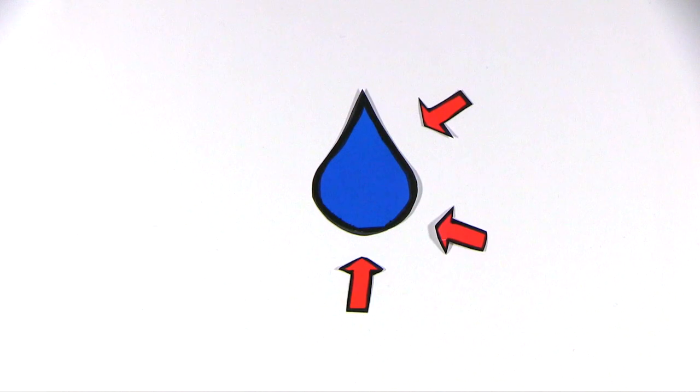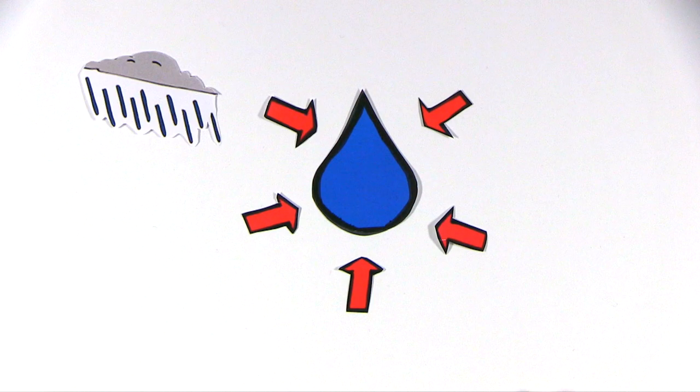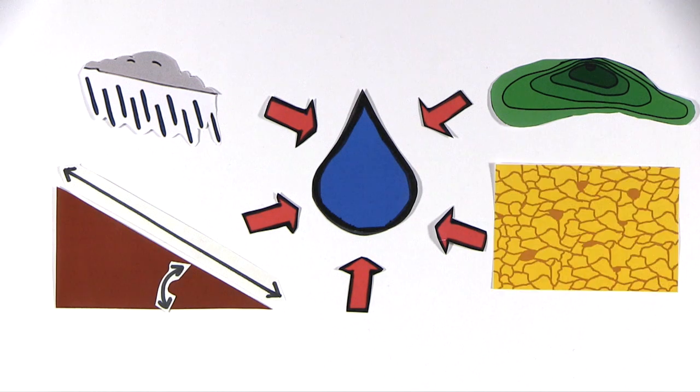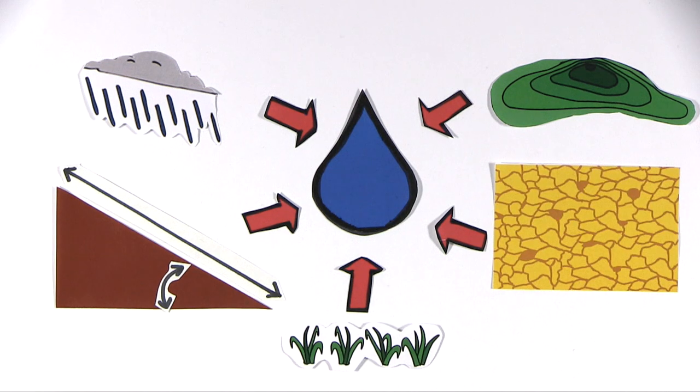Natural factors influencing water erosion are intense rainfall, topography, slope gradient and length, poor soil, organic and vegetation cover.